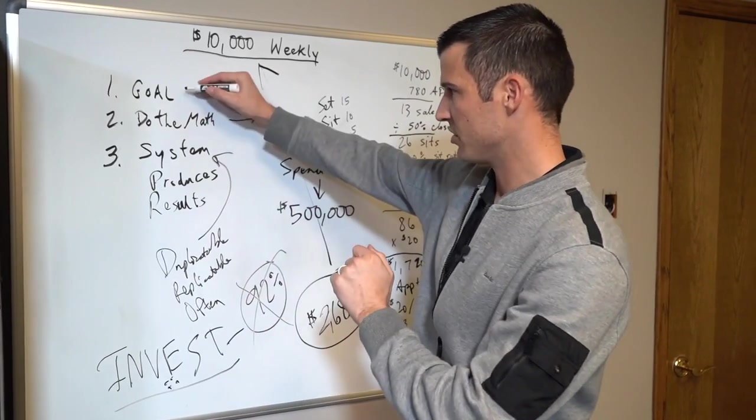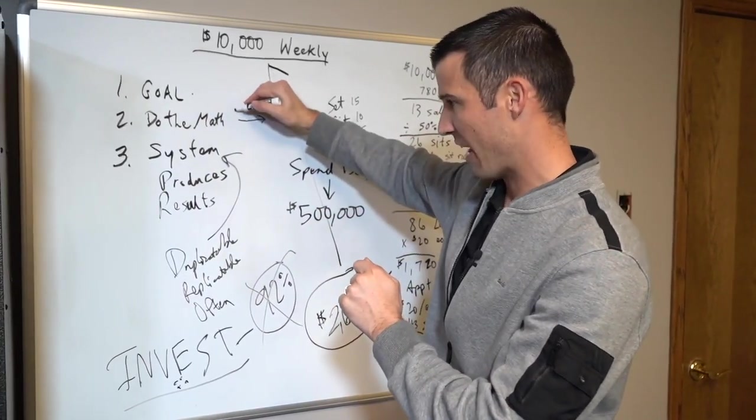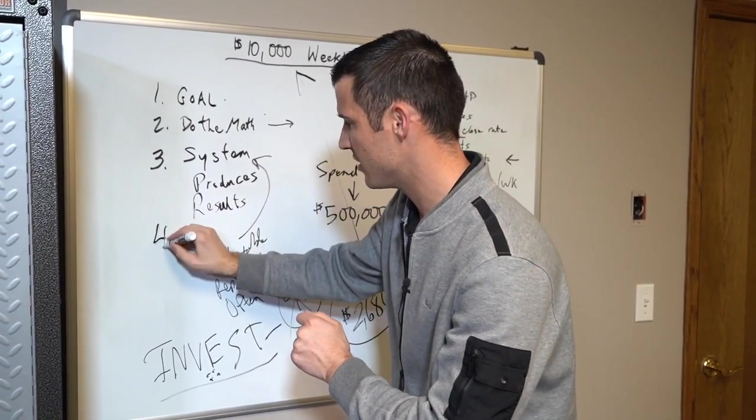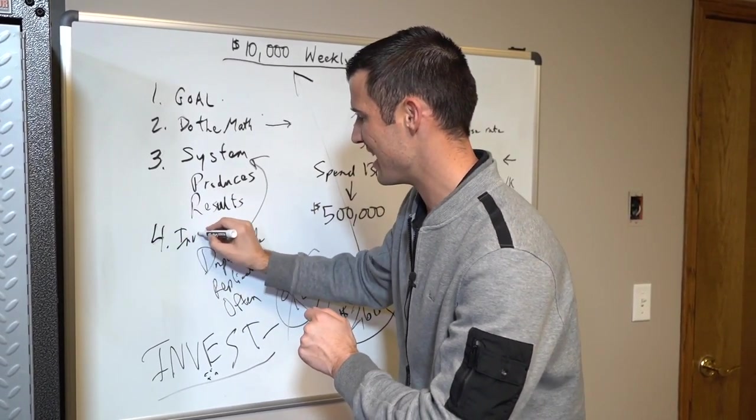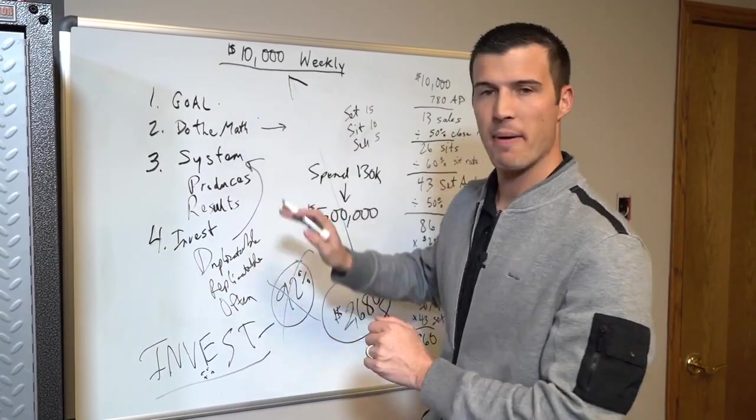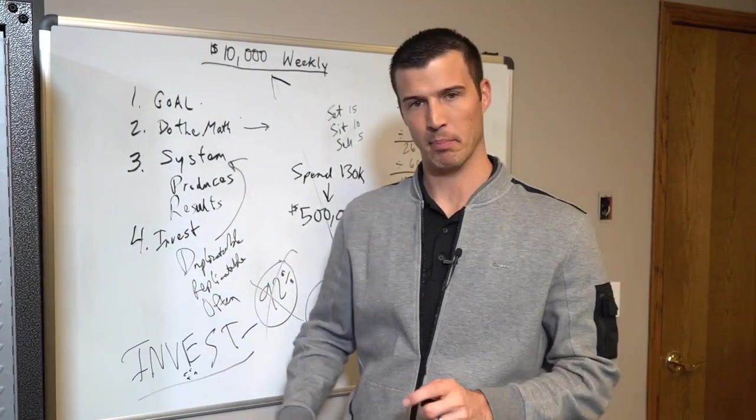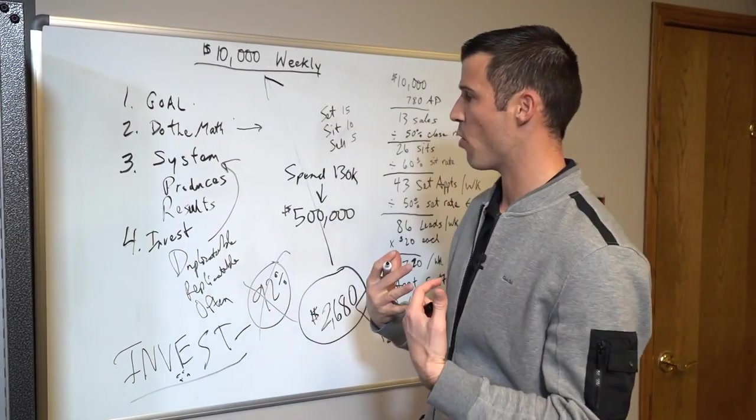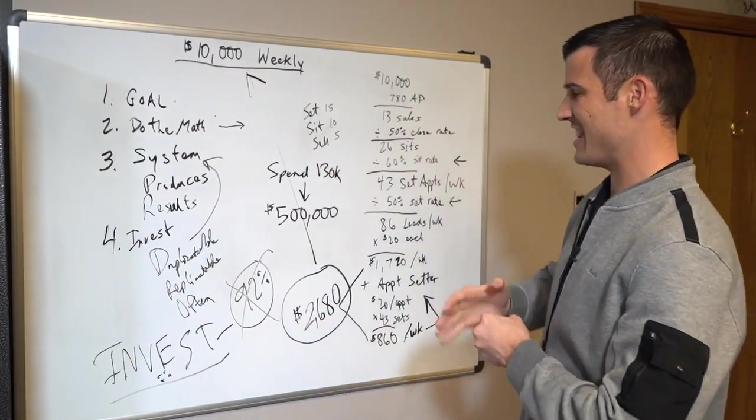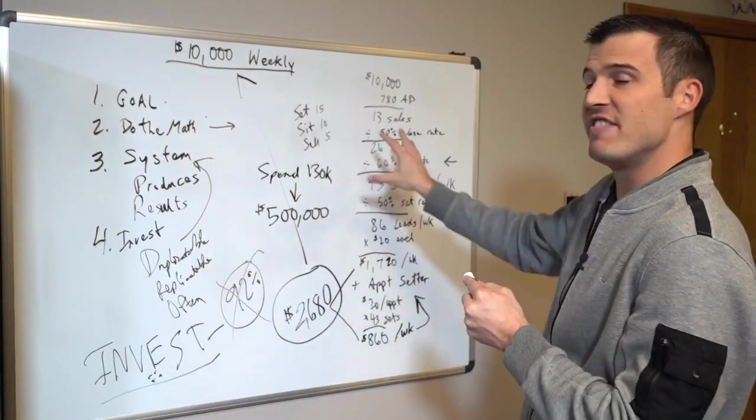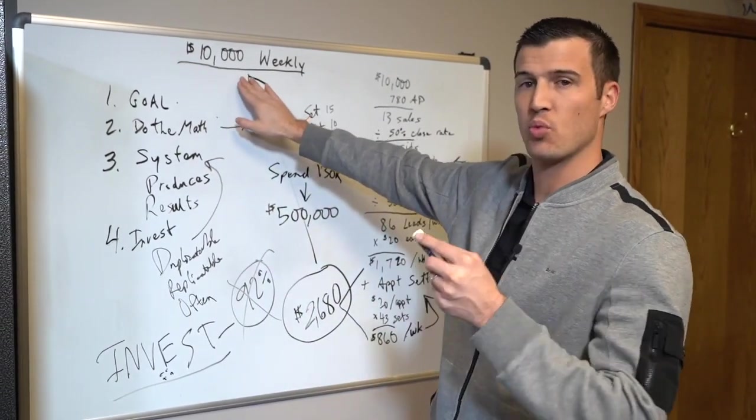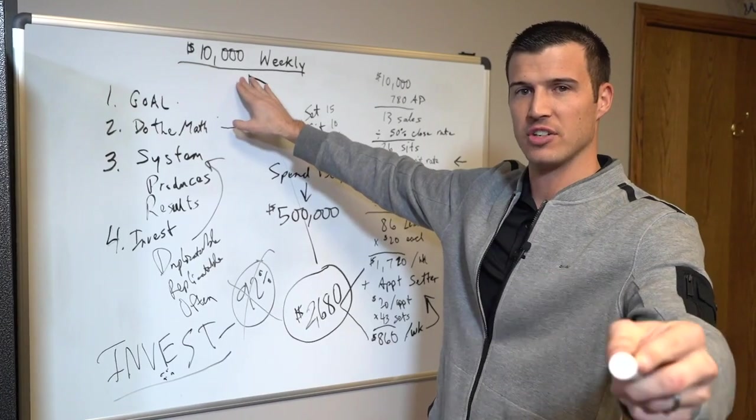So if you will set a goal, do the math, have a system, and then actually invest in your business - no matter what the goal is, it can happen. So what I would say is if you needed four steps to make this a reality, then this is how I've done it, how I would do it if I was you, and how you can earn $10,000 weekly as a life insurance agent.